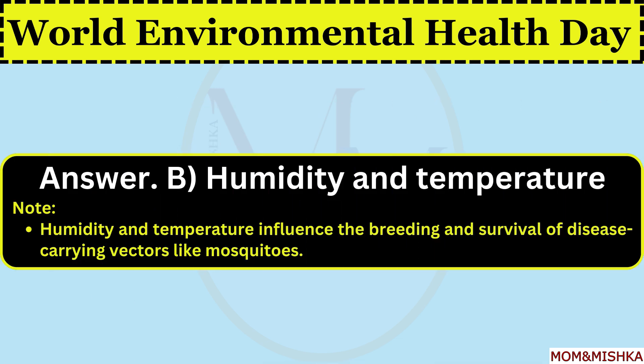Which environmental factor affects the spread of vector-borne diseases? Humidity and temperature. Option B: humidity and temperature influence the breeding and survival of disease-carrying vectors like mosquitoes.